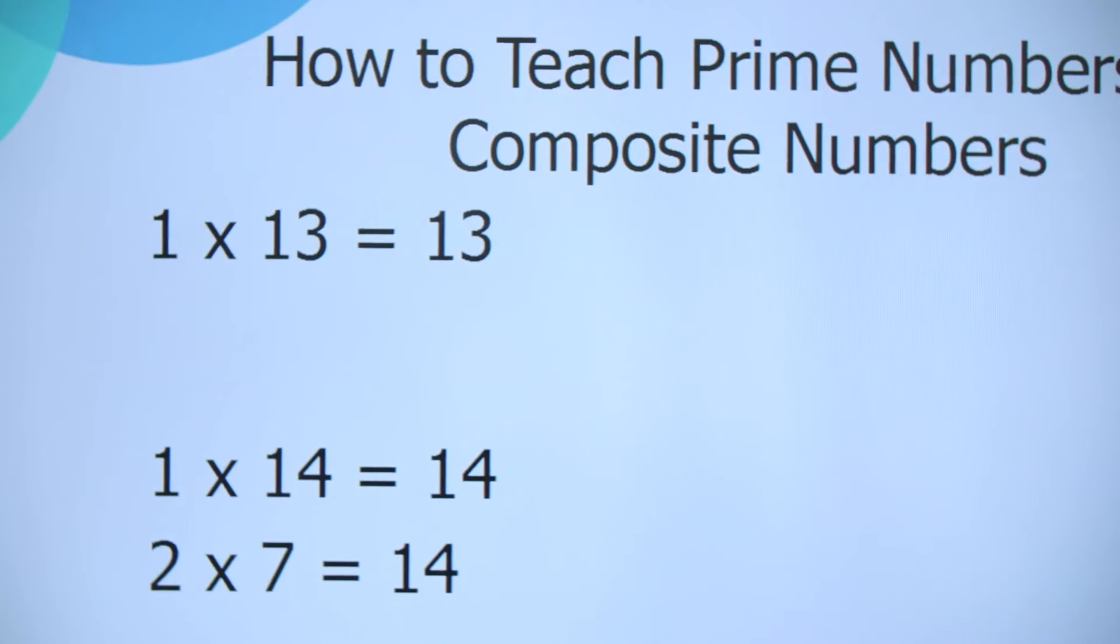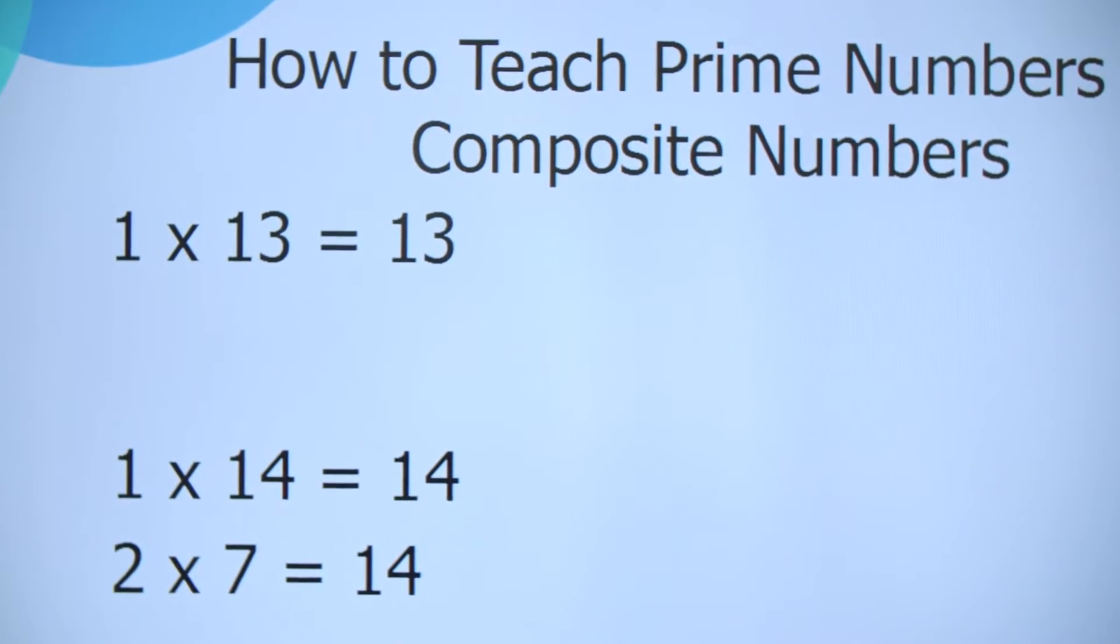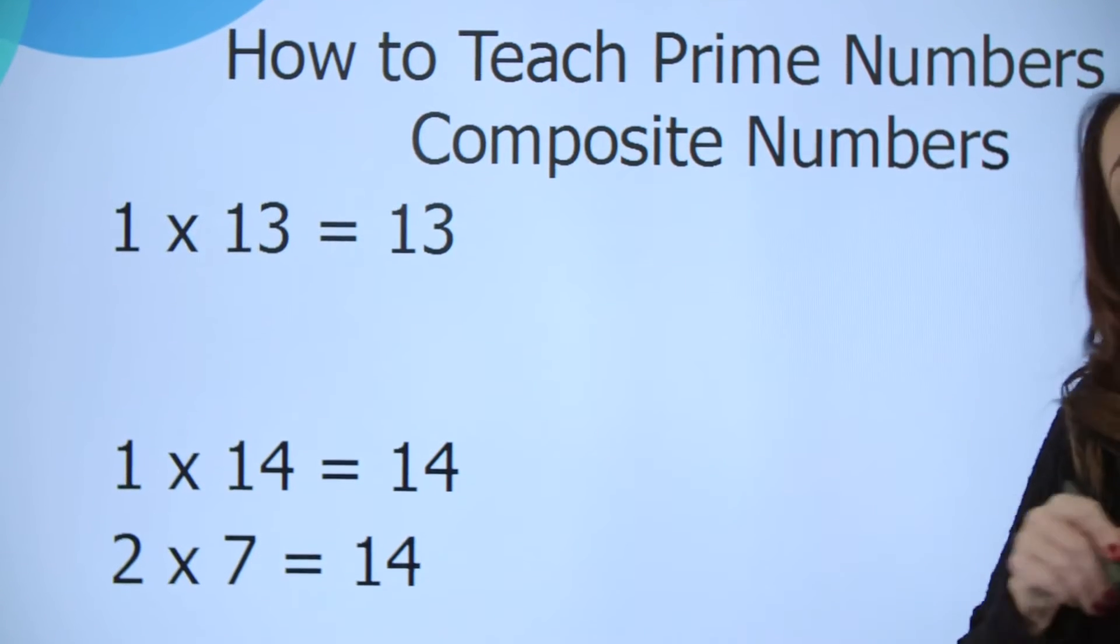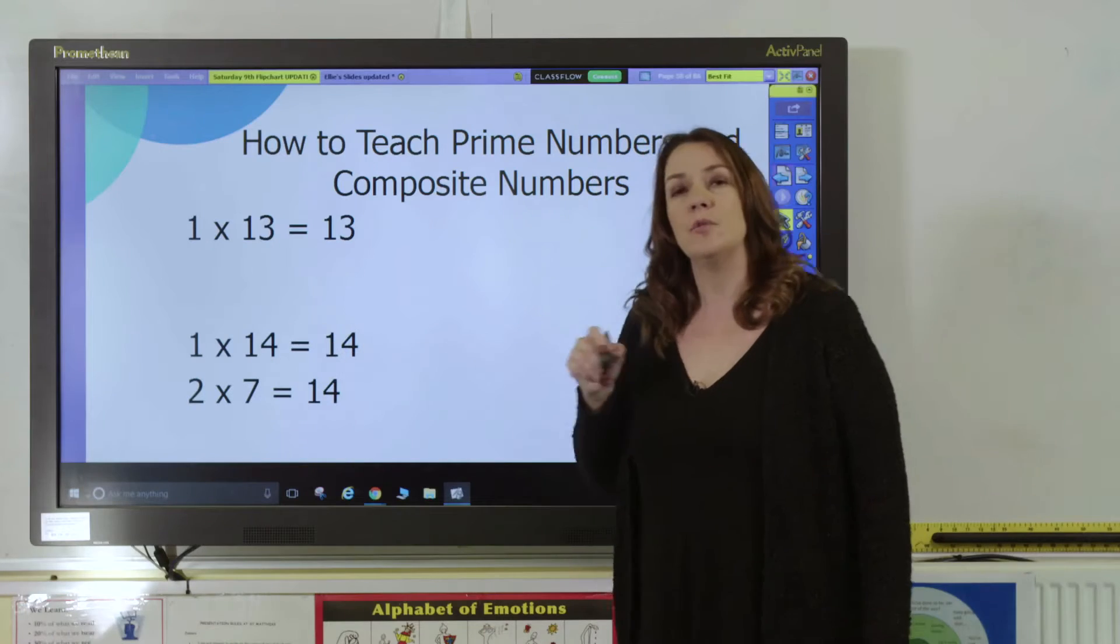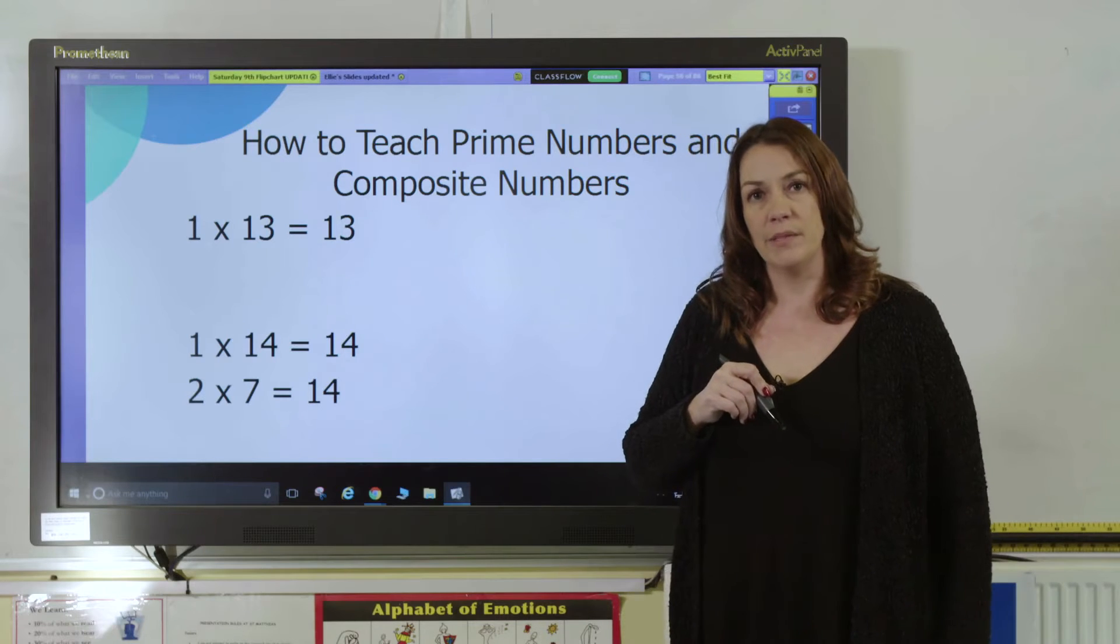Composite numbers are numbers that are made up of more than two factors. For example, the number 14 has the factors 1, 2, 7, and 14 in its times tables, so it is a composite number.